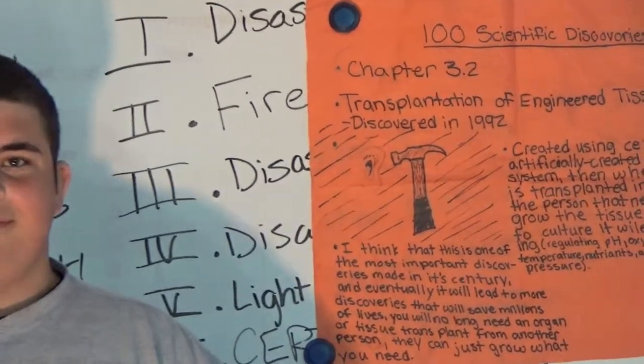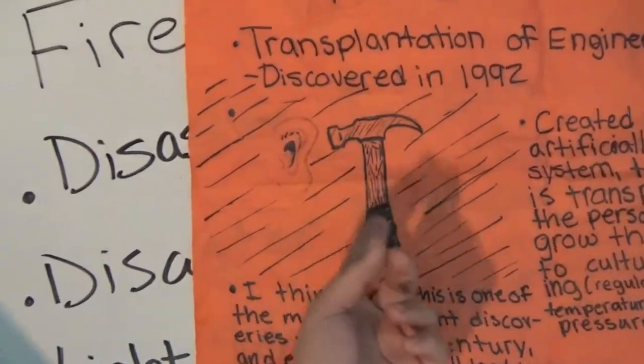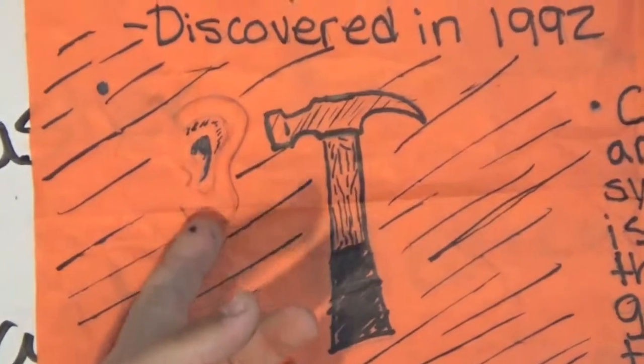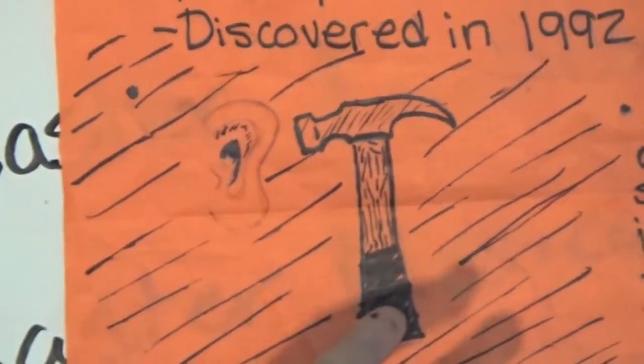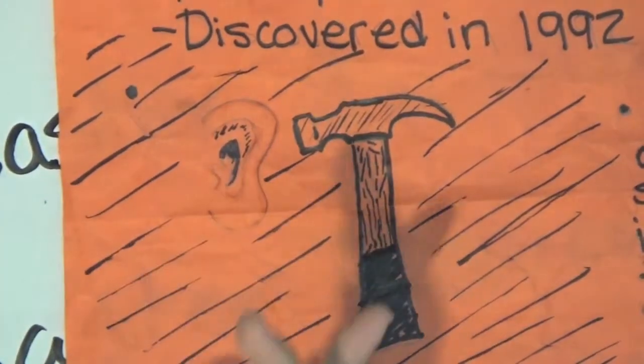All right, and explain that hammer there, if you would. This is just my picture. There's an ear right there, and that's a hammer. He's making the ear. It's engineering the tissue.